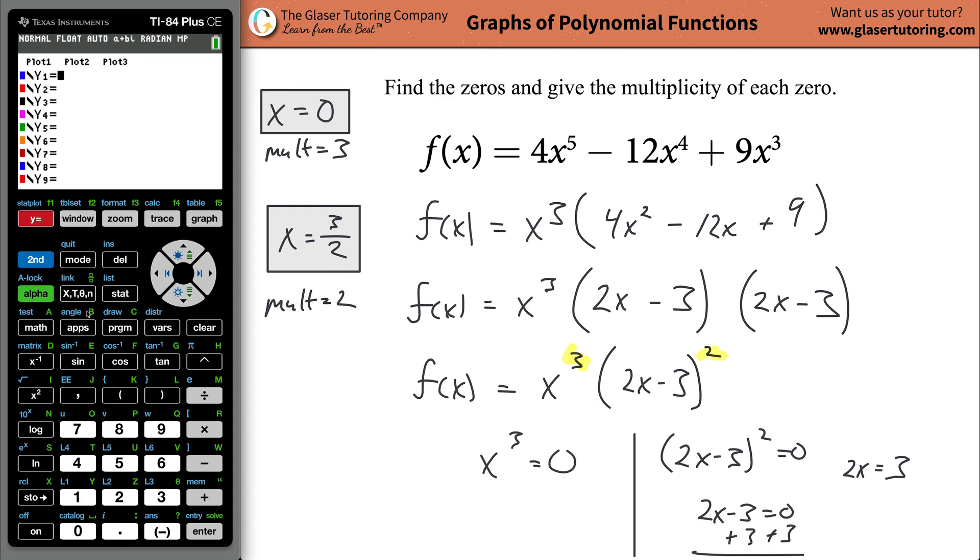What you can do, though, for a little visualization is you can now plot the function if you wanted, 4x raised to the fifth power minus then 12x raised to the fourth power, and then plus 9x raised to the third. And let's just double check I get everything in right. It looks pretty good. Go to zoom and then hit standard. Let's see where this is coming up. Cool. We're going to zoom in now. Go to zoom, hit number two. And there you go. So here's the function.